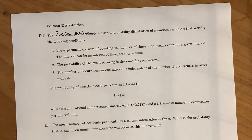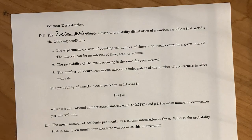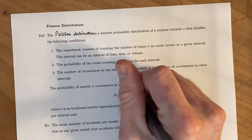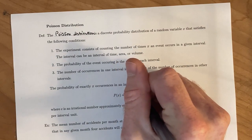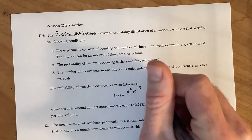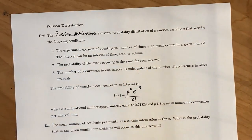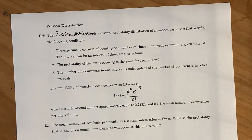For this one it's going to be a little weird and we have to use a calculator to calculate it. The probability of exactly x occurrences in an interval is mu to the x, times e to the negative mu, all over x factorial. E is an irrational number approximately equal to 2.71828, or you have an E button on your calculator — if you have a scientific calculator, you also have an E button.